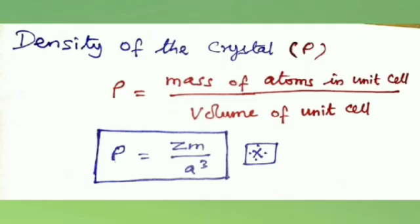The next topic is density of the crystal, with symbol rho. It is possible to calculate the density of the crystal from the dimensions of the unit cell and mass of atoms in it. The formula is rho equals mass of atoms in unit cell divided by volume of unit cell, which is ZM by a cubed.